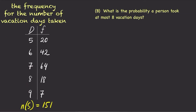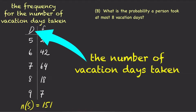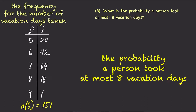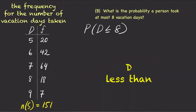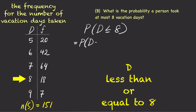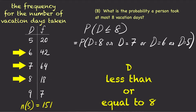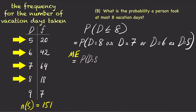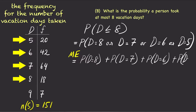What is the probability a person took at most 8 vacation days? Again, if we let d stand for the number of vacation days taken, then we can write this as p of d is less than or equal to 8. Since d less than or equal to 8 means d equals 8, 7, 6, or 5, and each of these events are mutually exclusive, we can use the addition rule and rewrite this as p(d=8) + p(d=7) + p(d=6) + p(d=5).